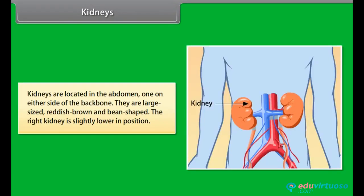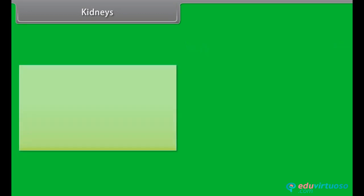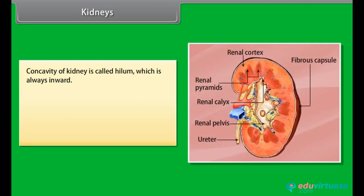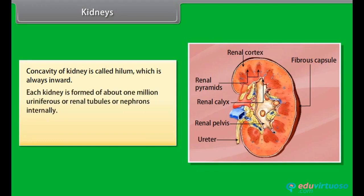Kidneys are located in the abdomen, one on either side of the backbone. They are large-sized, reddish-brown, and bean-shaped. The right kidney is slightly lower in position. The concavity of the kidney is called the hilum, which is always inward. Each kidney is formed of about 1 million uriniferous or renal tubules, or nephrons, internally.